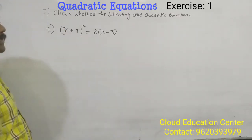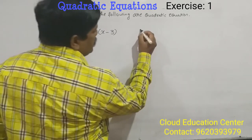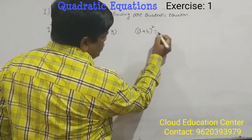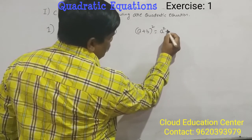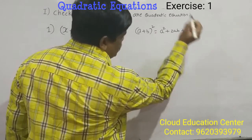You know that the a plus b whole square formula, that is, a plus b whole square is equal to a square plus 2ab plus b square.